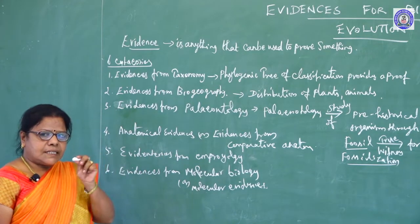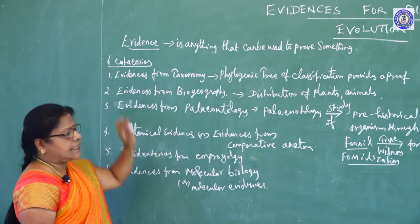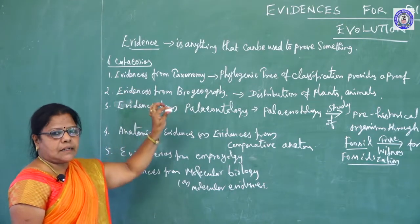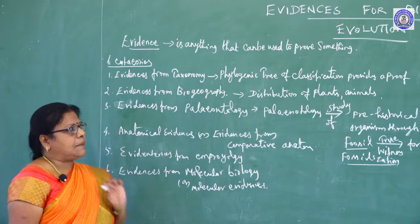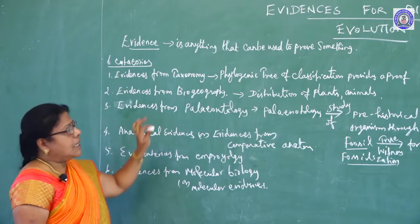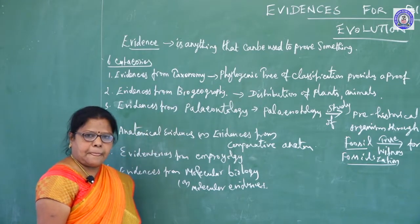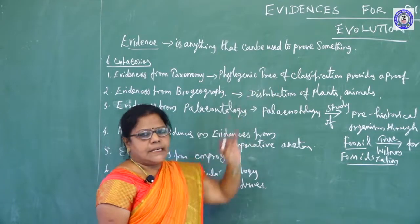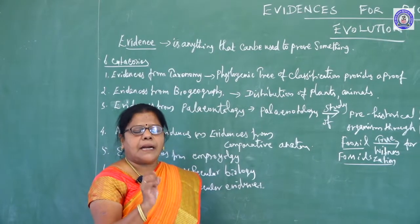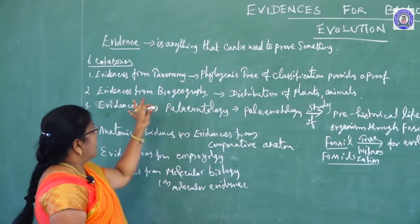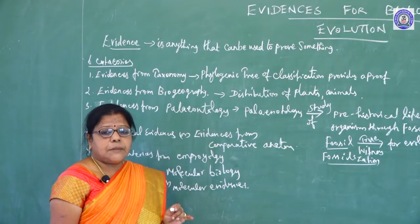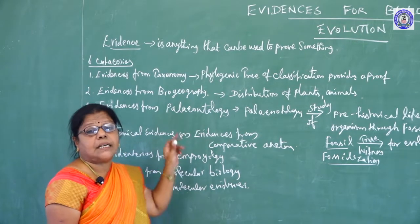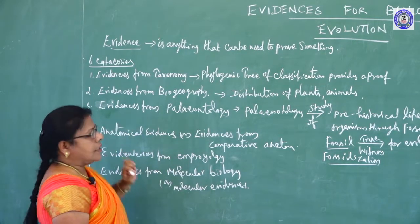Out of these six categories, the first two categories are not given in our syllabus, but these two categories are included in NEET syllabus. The first one, evidences from taxonomy — the phylogenetic tree of classification provides a proof of common ancestors. Second one, evidences from biogeography — distribution of plants and animals provides a proof for biological evolution.